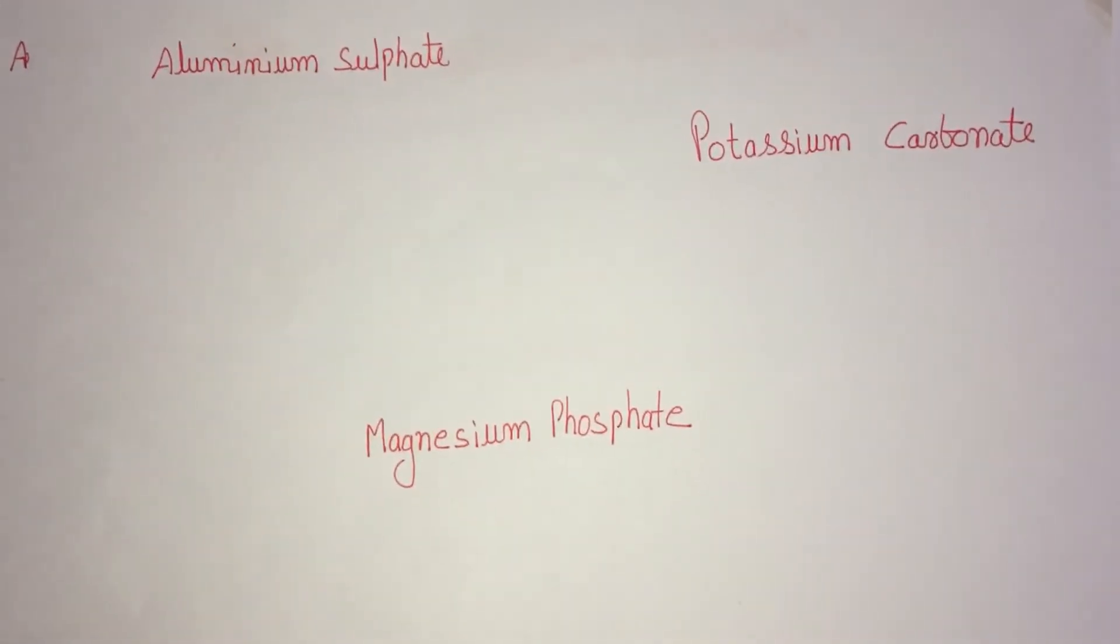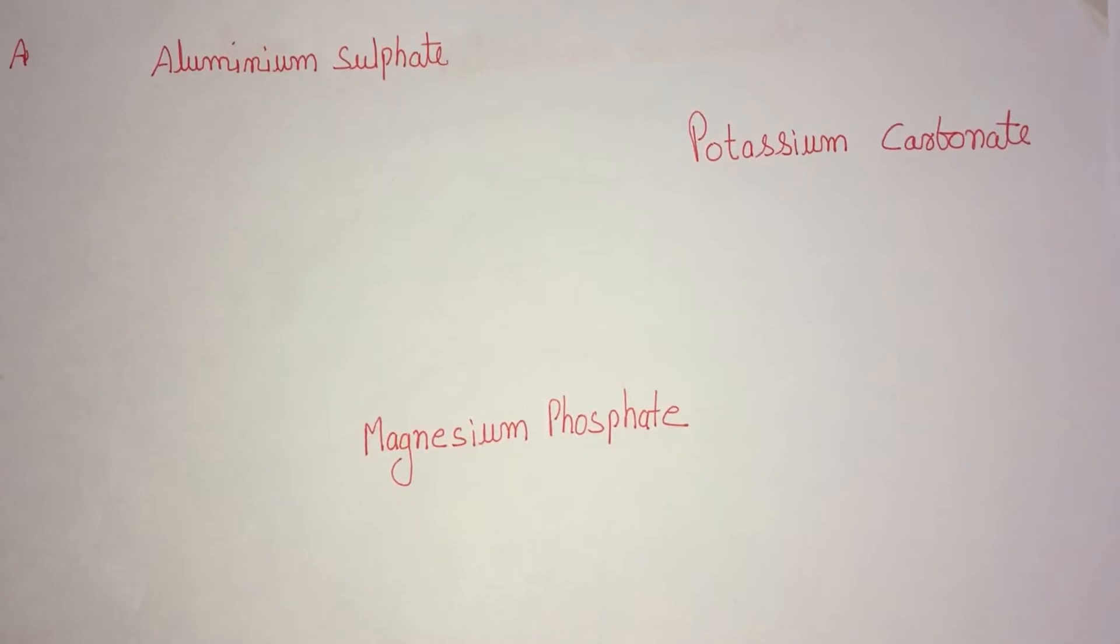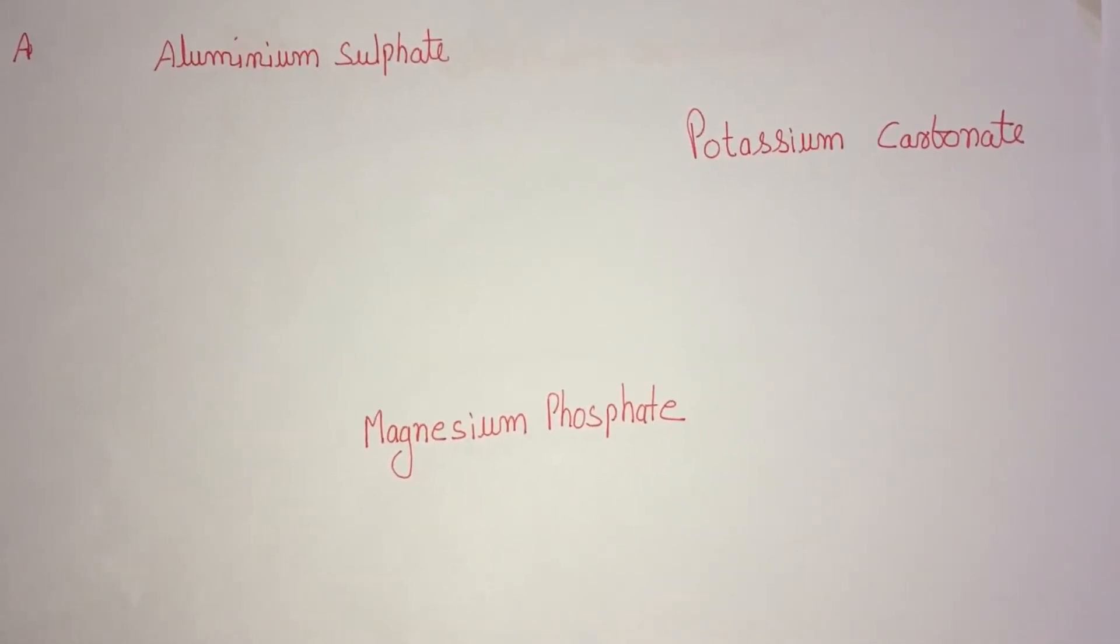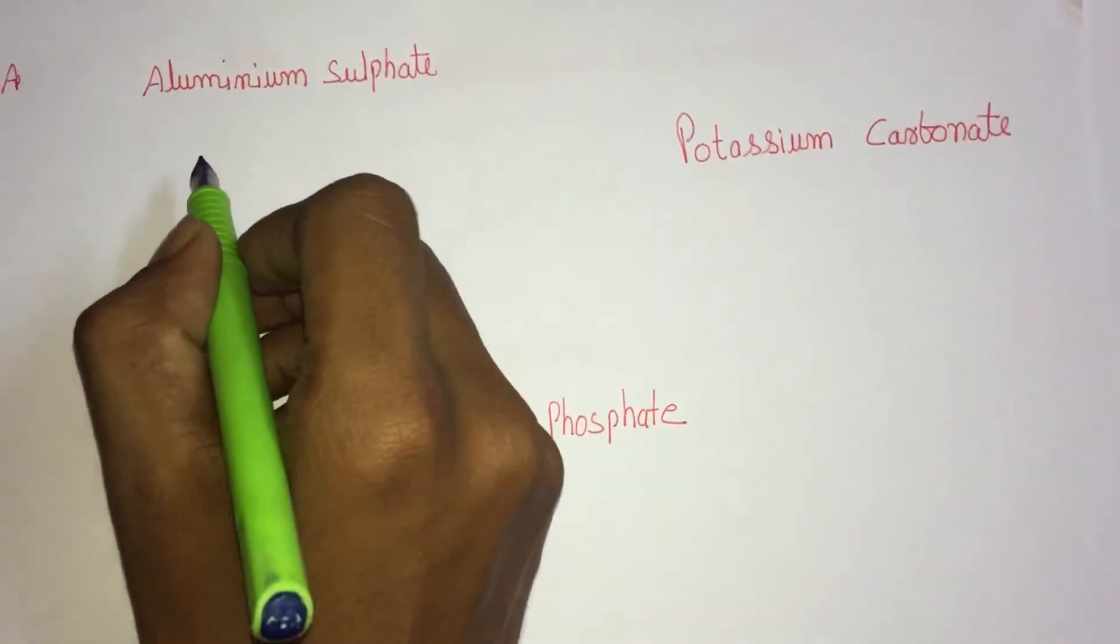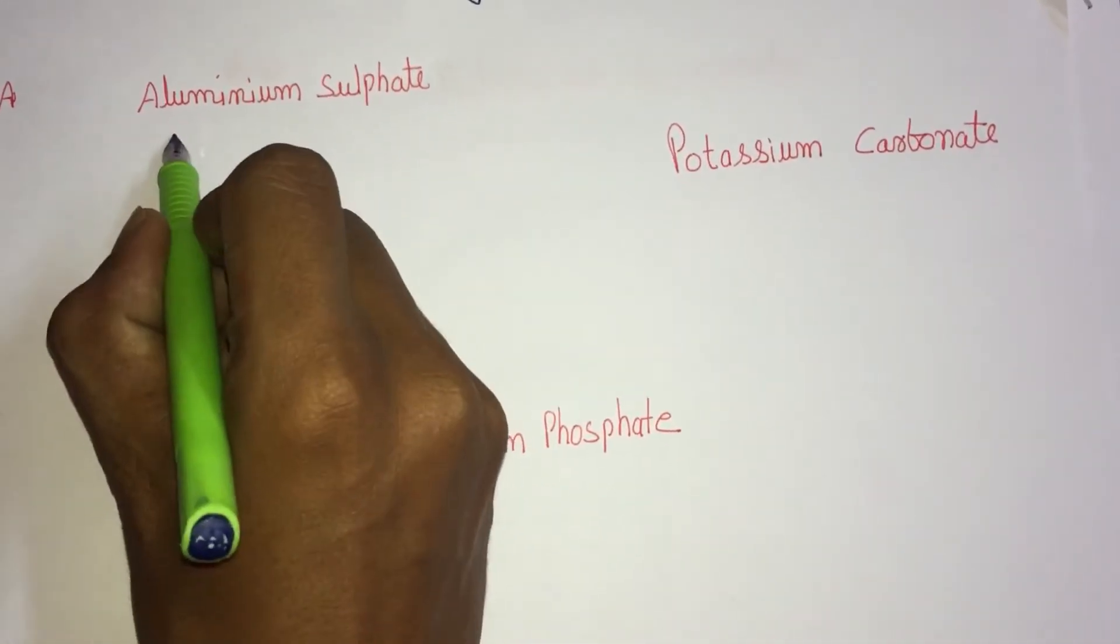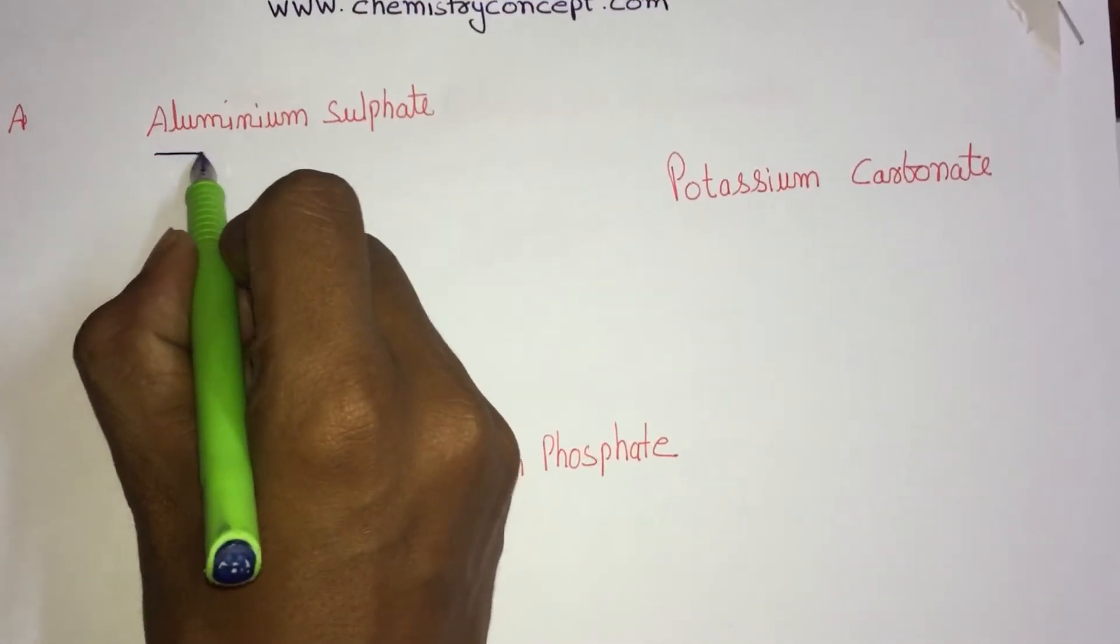Hello students, welcome to Chemistry Concept. Today we are going to learn how to write a formula of some ionic salts. Let's start with aluminum sulphate.